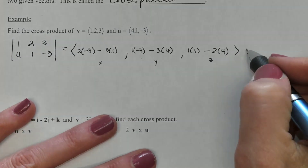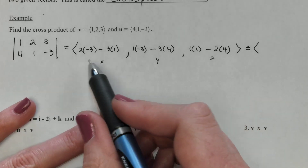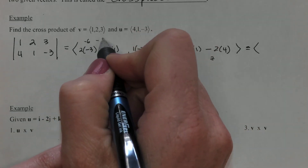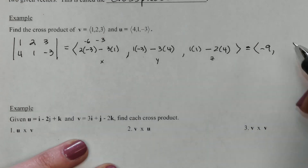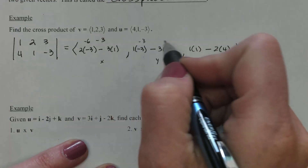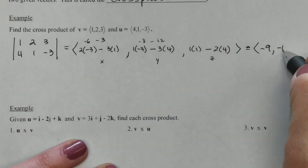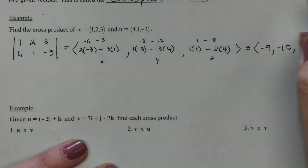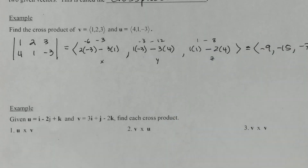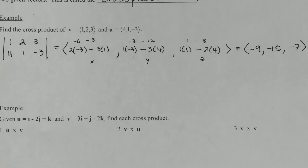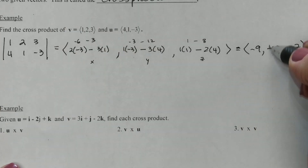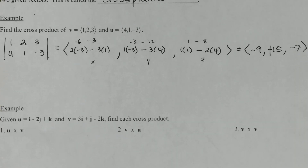All we're going to do now is simplify. Two times negative three is negative six, minus three gives me negative nine. Here I've got negative three minus twelve, which gives me negative fifteen. And here I've got one minus eight for a negative seven. The very last step to cross product — and you kind of have to drink the Kool-Aid on this one because we don't provide the proof — is that you have to switch the sign on the middle term. If it is negative, turn it positive; if it's positive, turn it negative.